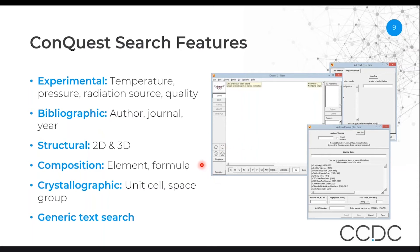You can search based on simpler terms such as the composition — so anything that contains certain elements or has a certain formula — crystallographic terms such as the size of the unit cell or the symmetry properties. We also allow for generic text searching, so if you're interested in entries which contain certain words such as natural products or the like, you're able to do that quite easily with the interface as well.